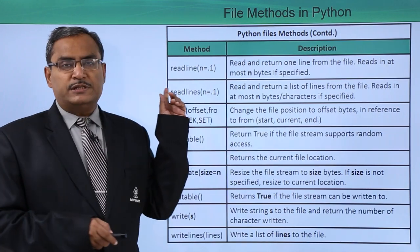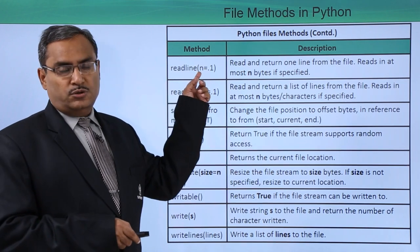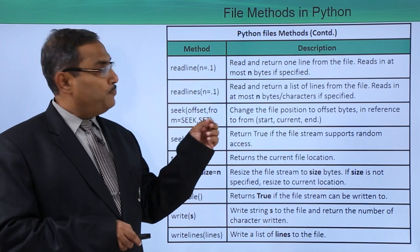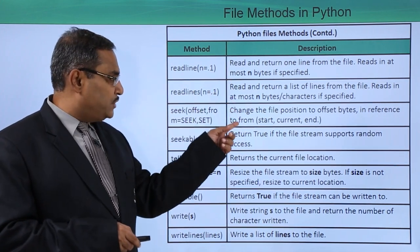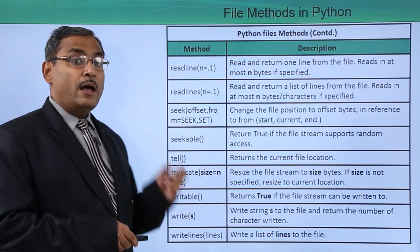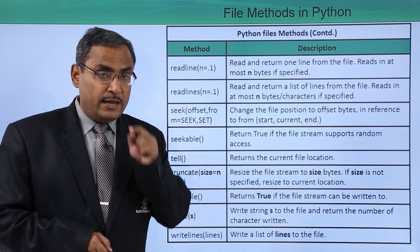Here you see previously we had readlines. In that case we had n equals minus 1, but here you see n equals 0.1. What are the respective changes - we are having almost the same methods, the same method lists, but the input parameters are getting differed.